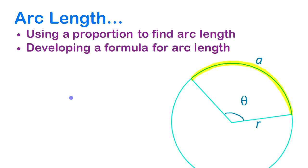Here we're going to look at how you can find the length of an arc in a circle, like the one that's highlighted in yellow there, given the central angle and the radius of that circle.